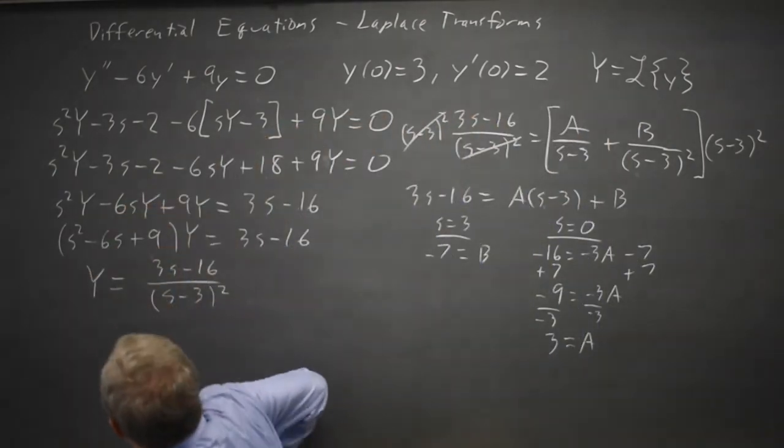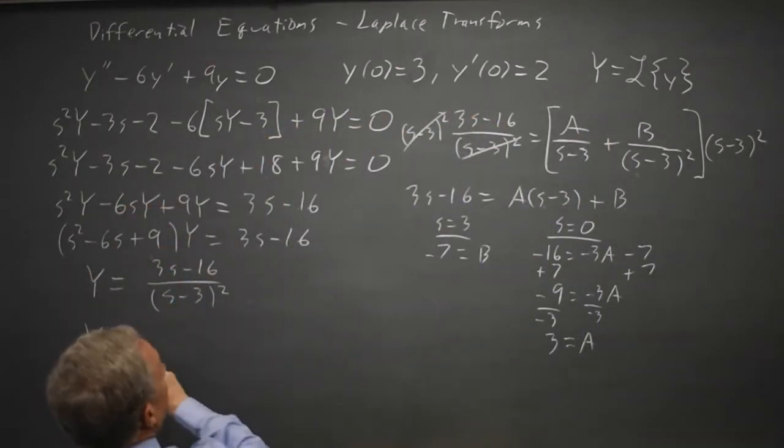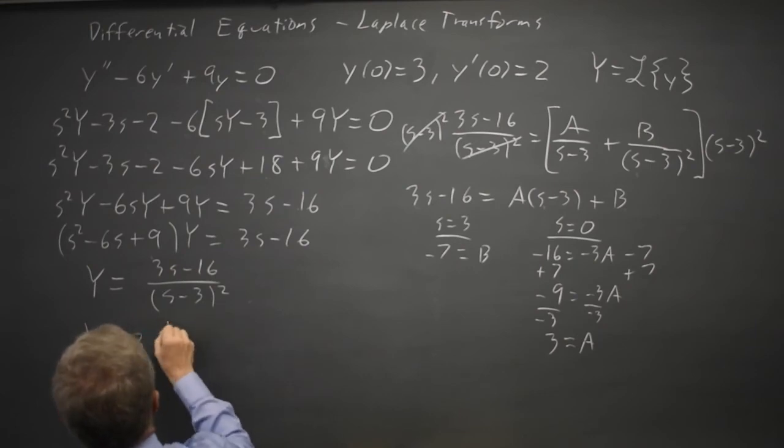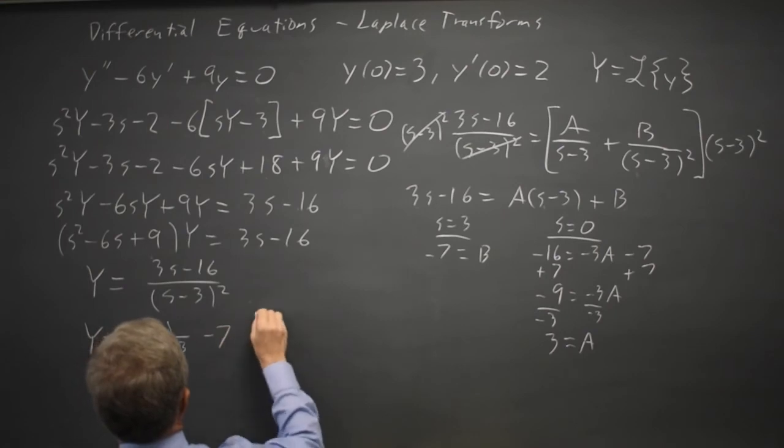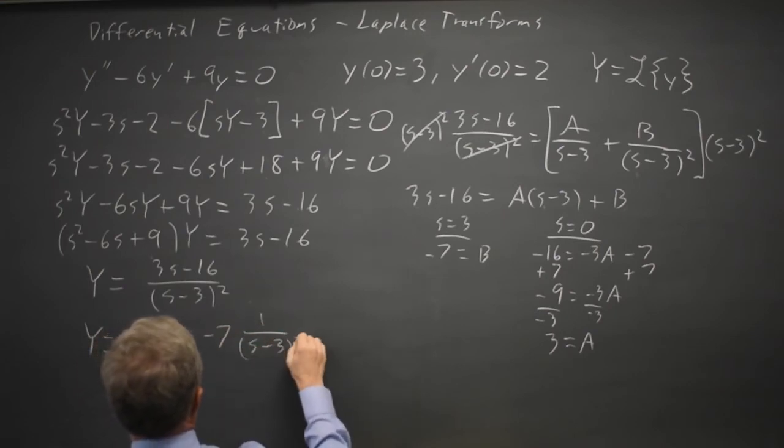So the transform of my solution equals 3 times 1 over s minus 3 and then minus 7 times 1 over s minus 3 squared.